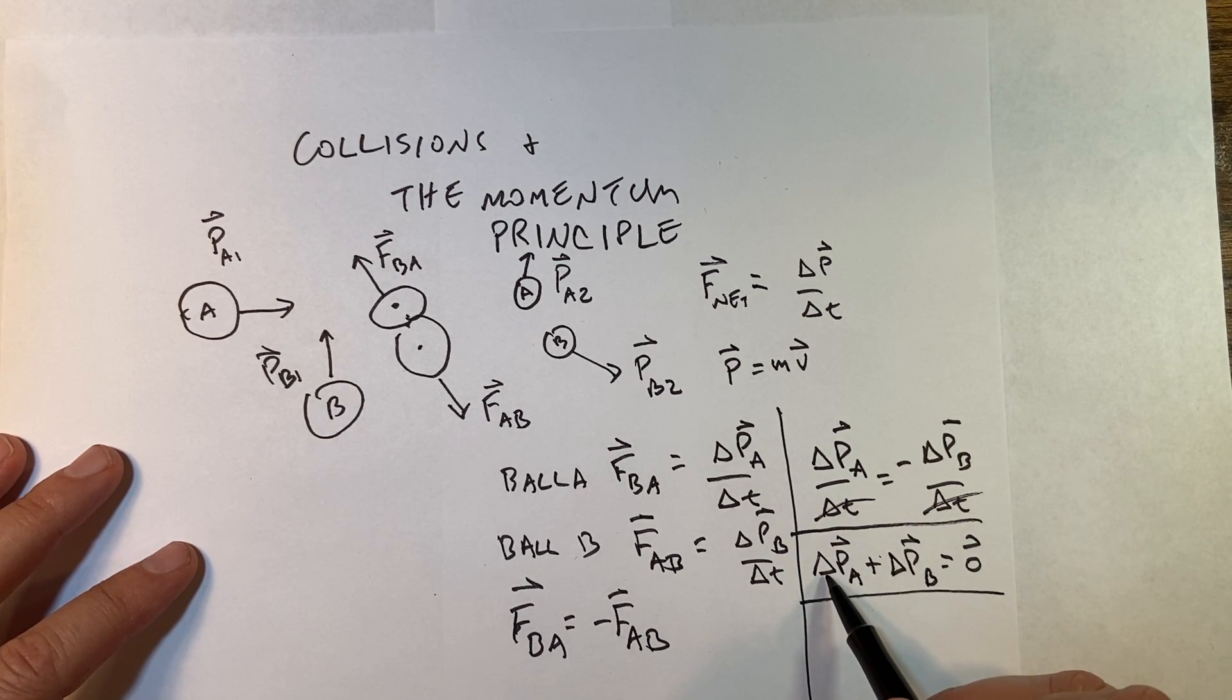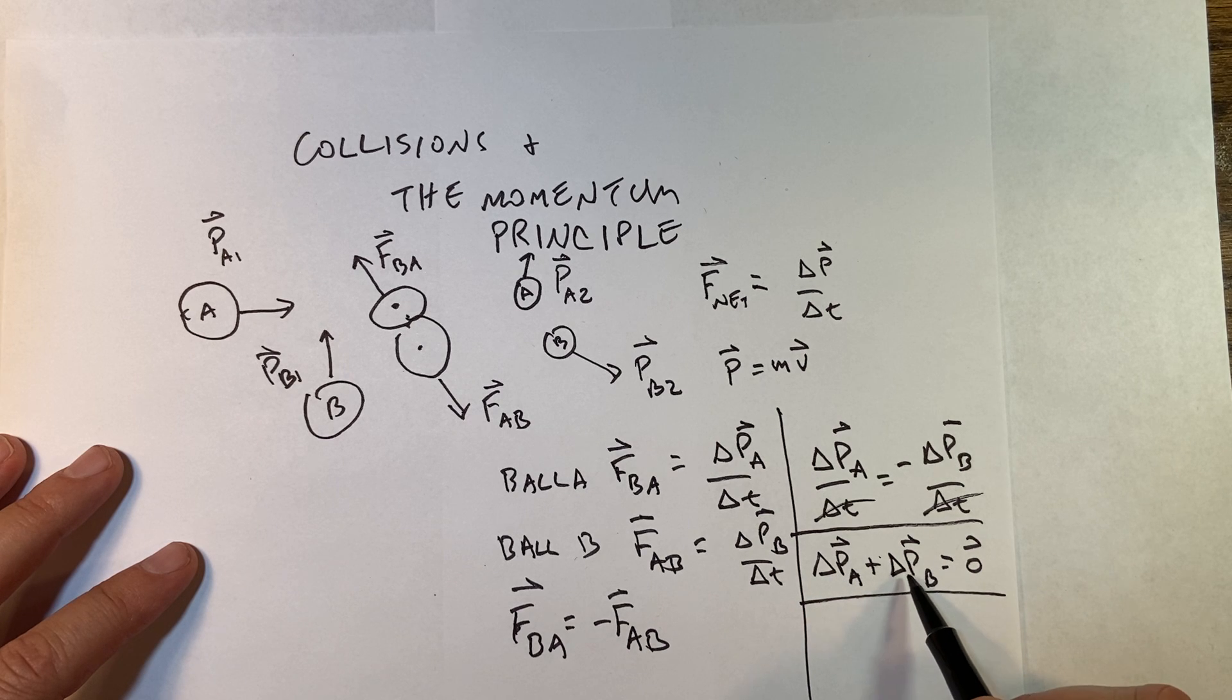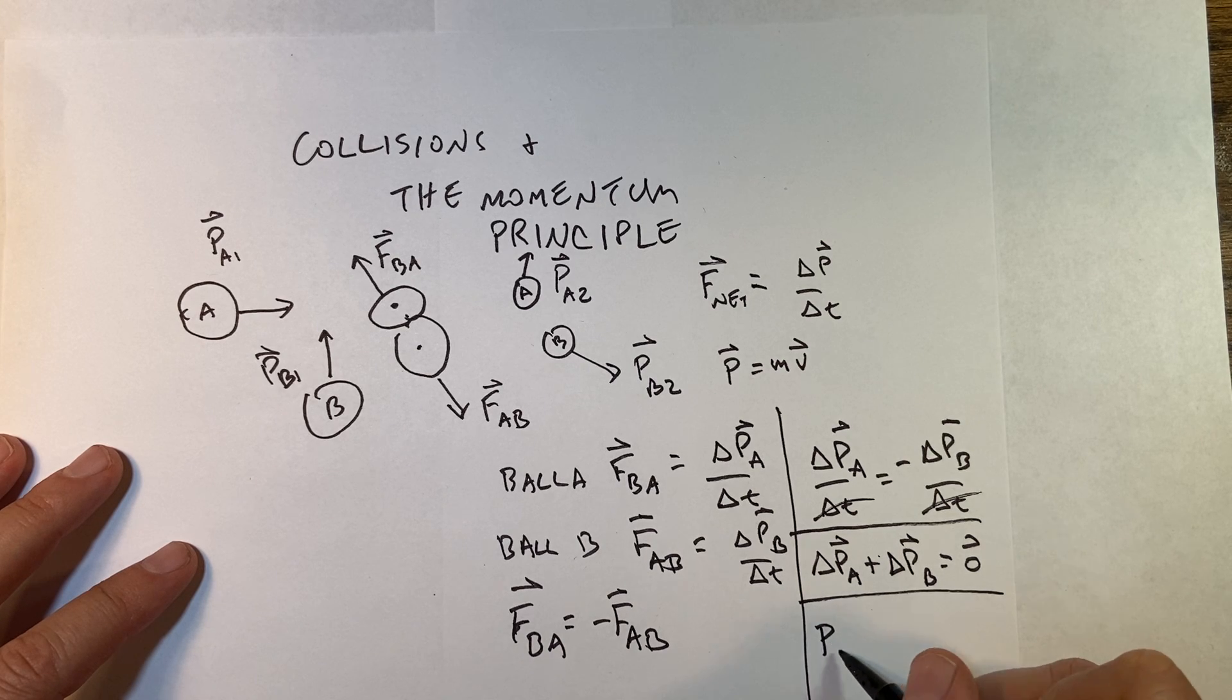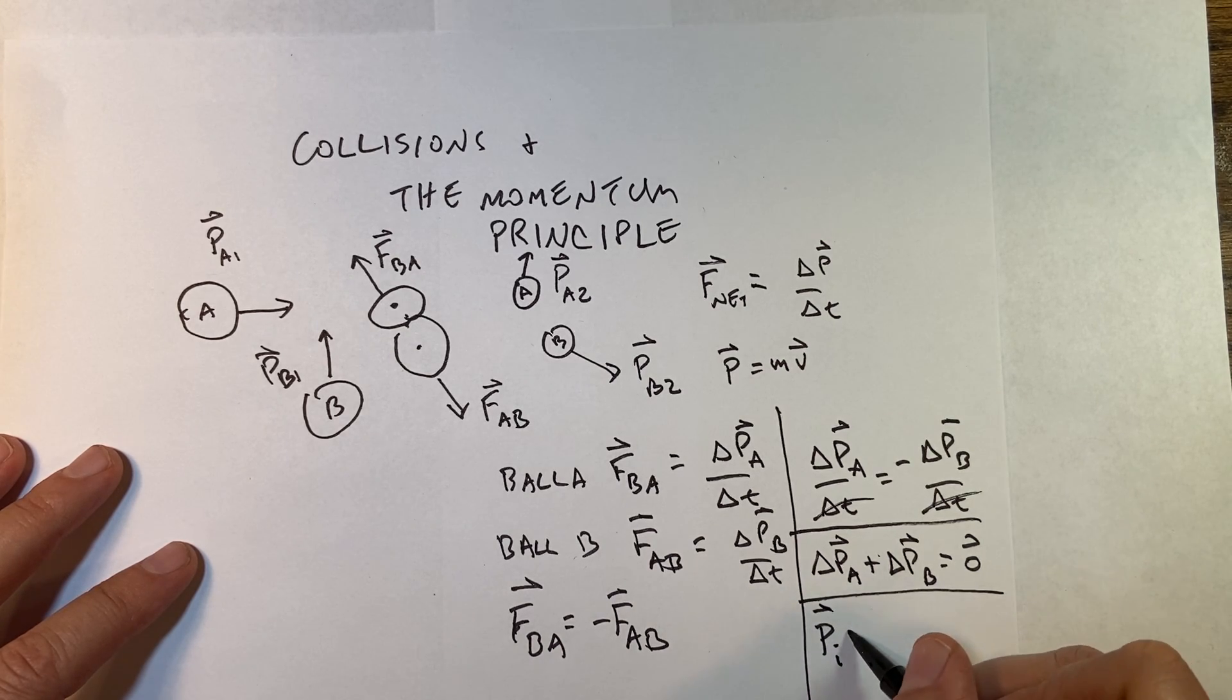And in fact, I could say if the change in A plus the change in B is zero, the change in momentum is zero, the total change in momentum. Or I could say the initial momentum is equal to the final momentum.